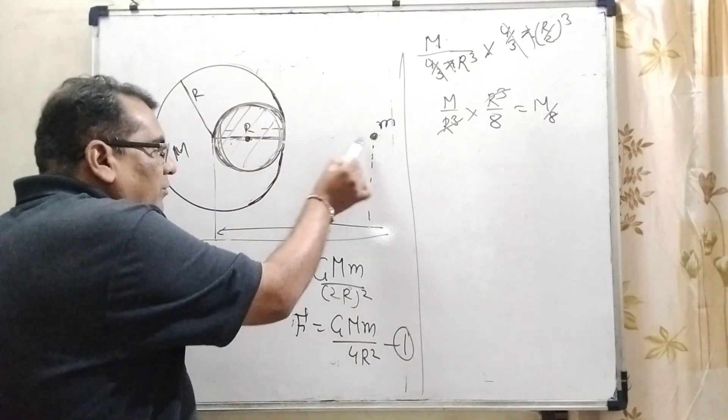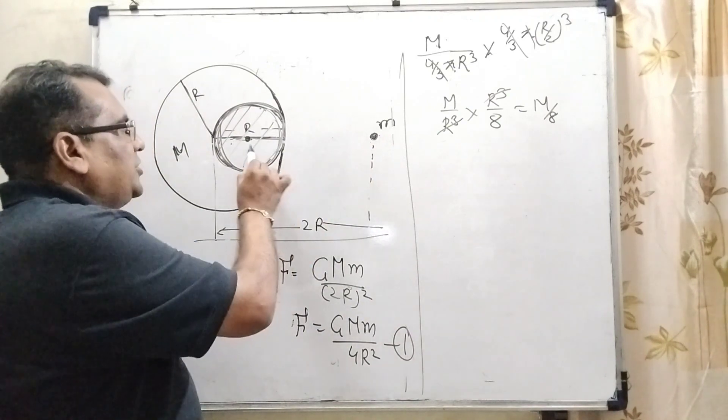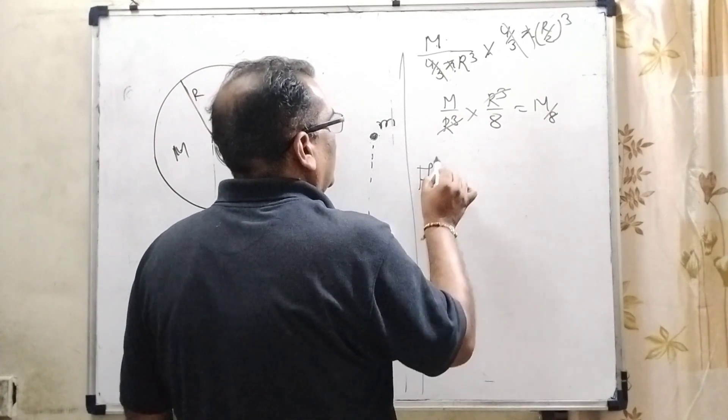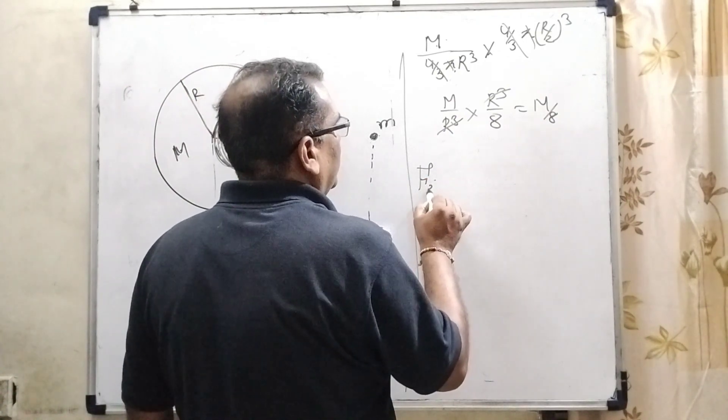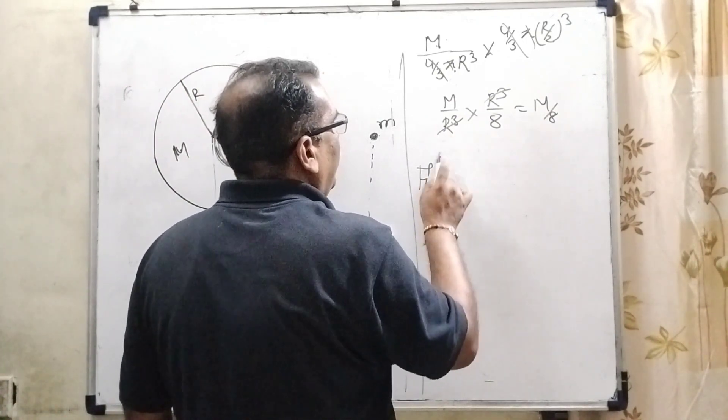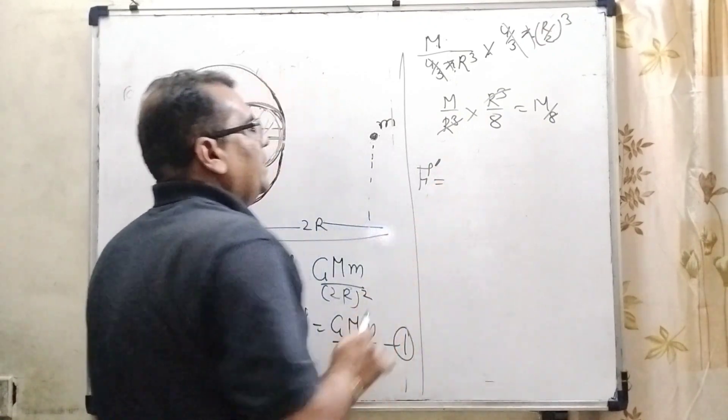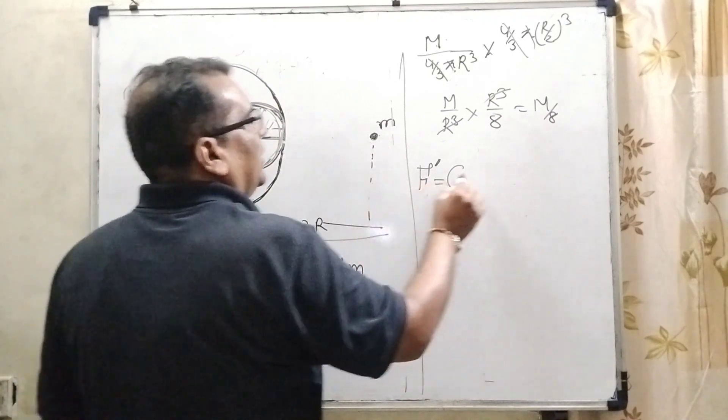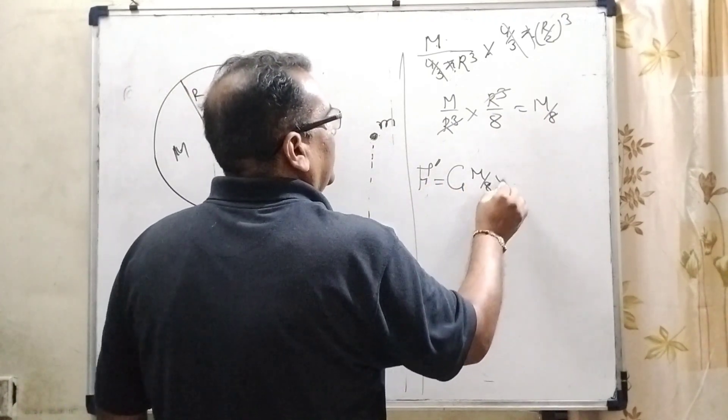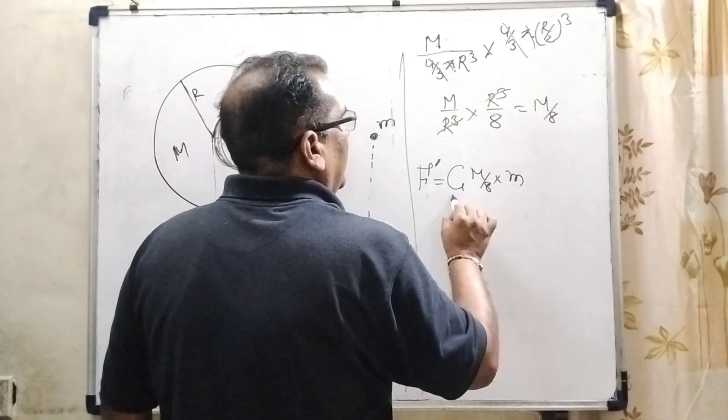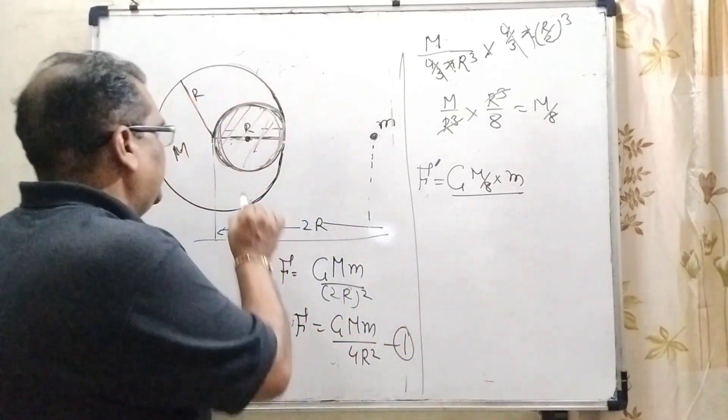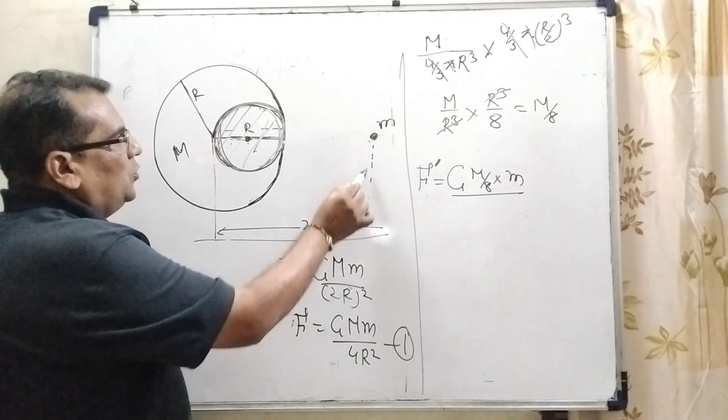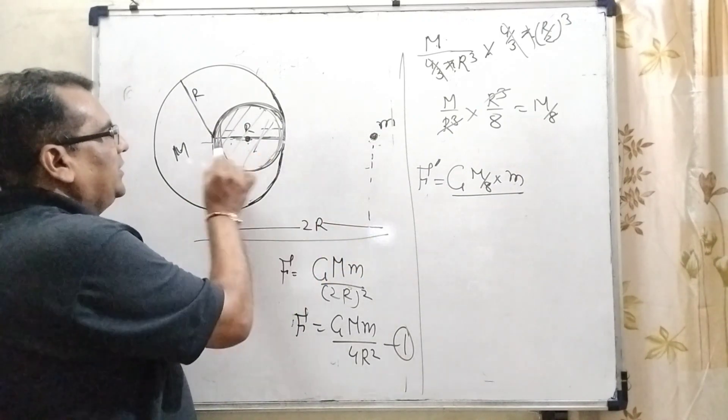Now we have to calculate the force of attraction between this body and this body. So F we can calculate, given the name F dash. And G, what is the mass of this sphere? M by 8. And mass of this body is M. And what is the distance between this point to this point? It is very important. Total distance, this distance is given 2R.